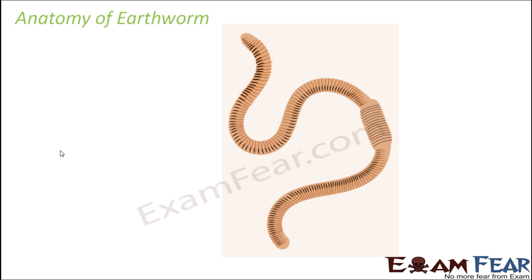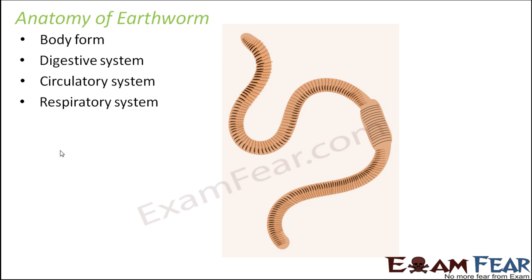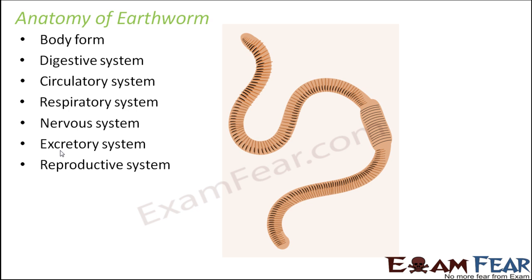That was all about the morphology of the earthworm — the external things which are visible. Now we are going to talk about the anatomy of the earthworm, which covers internal structures like organs — stomach, intestine, heart — that are not visible from outside. We will study the following organ systems: body form, digestive system, circulatory system, respiratory system, nervous system, excretory system, and reproductive system.